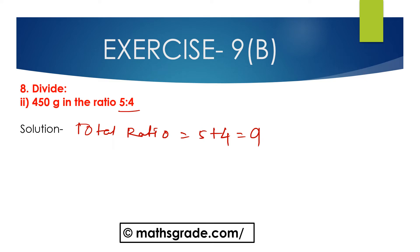In the ratio 5 is to 4, the antecedent is 5 and the consequent is 4. The first part is 5 divided by total ratio 9, multiplied with 450 grams.